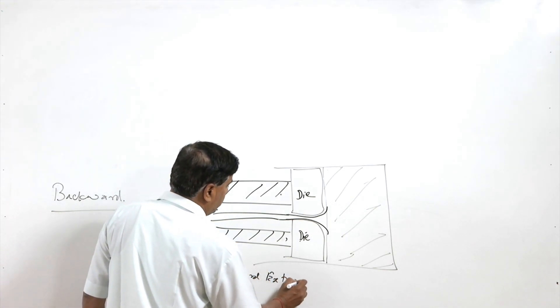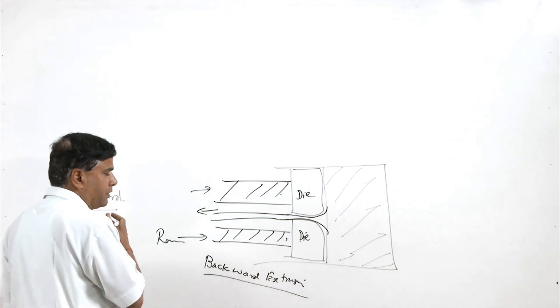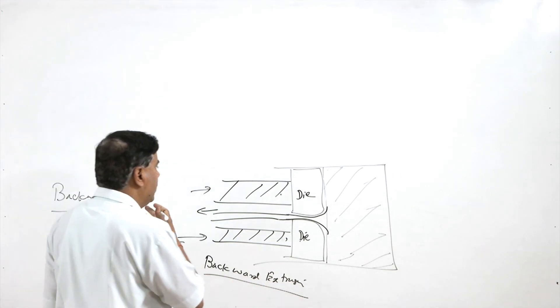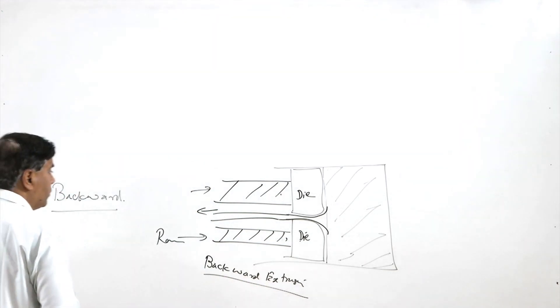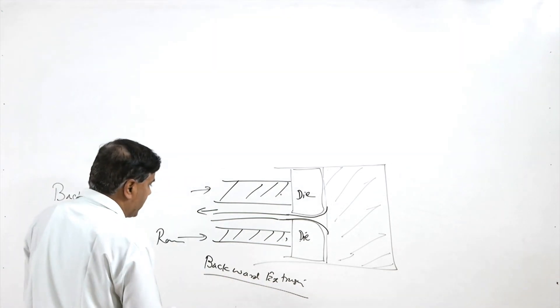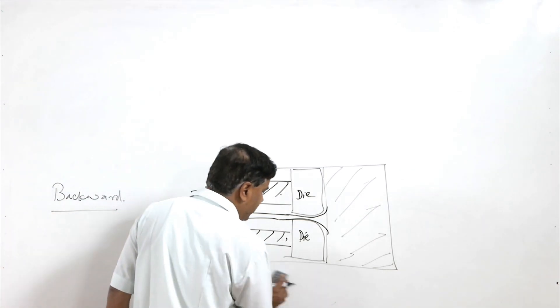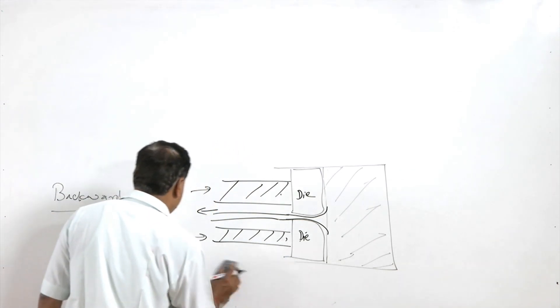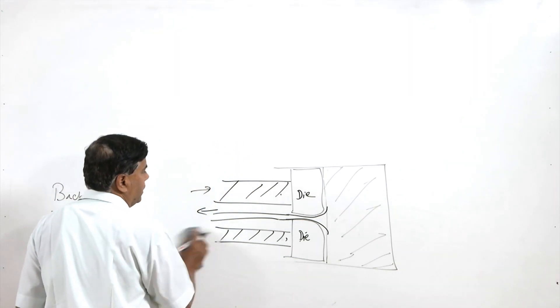In forward extrusion, the flow of material from the die opening was in the same direction as the ram. In backward extrusion it is opposite — that is why it is called backward extrusion.